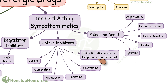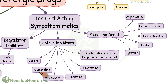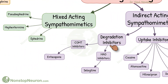Uptake inhibitors are tricyclic antidepressants like imipramine, amitriptyline, sibutramine, duloxetine, milnacipran, atomoxetine, and cocaine. To prevent degradation, we have MAO inhibitors like selegiline and COMT inhibitors like entacapone.